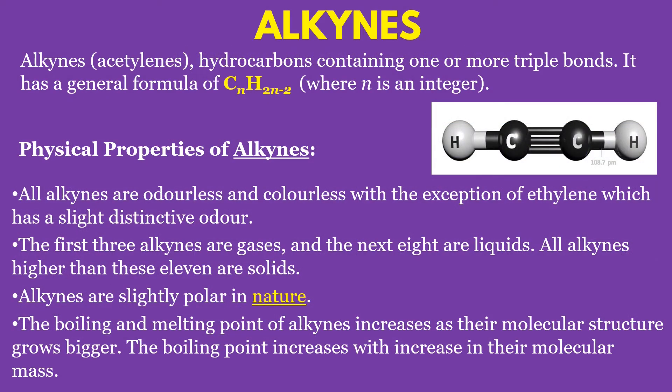The third type of hydrocarbon is the alkyne. Alkynes are also known as acetylenes — hydrocarbons containing one or more triple bonds. It has a general formula of CnH(2n-2), where n is an integer.